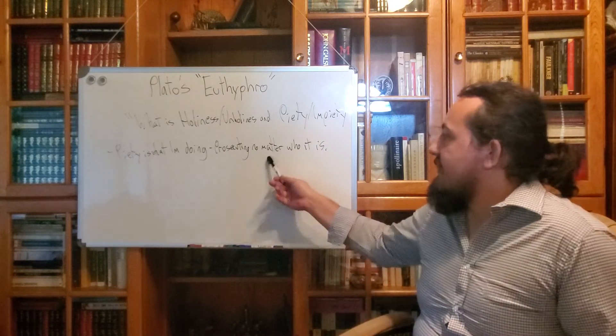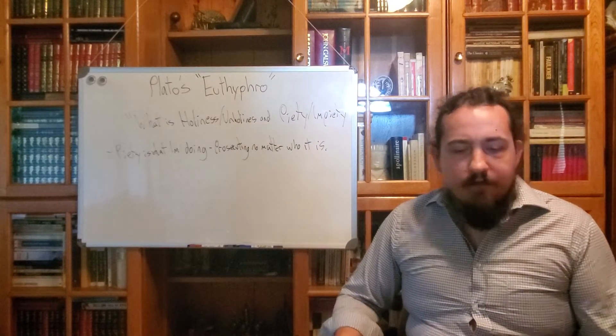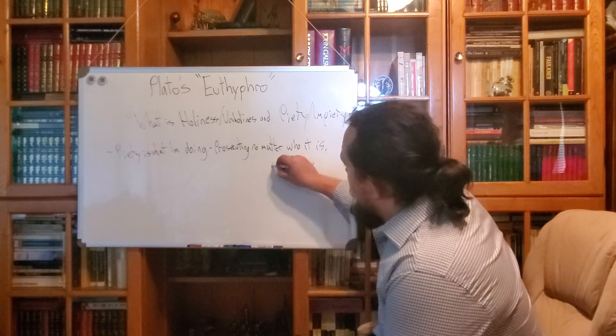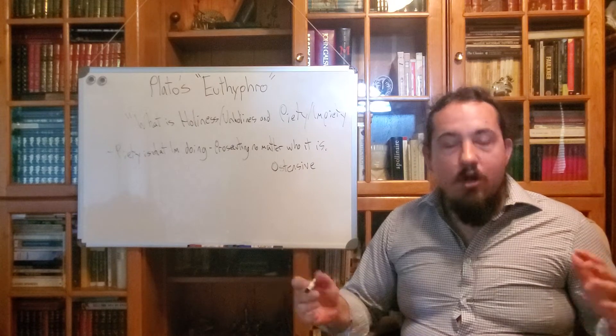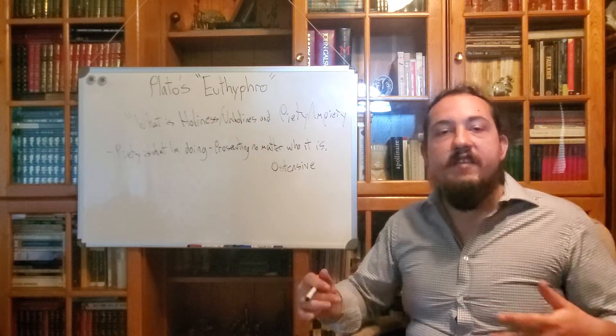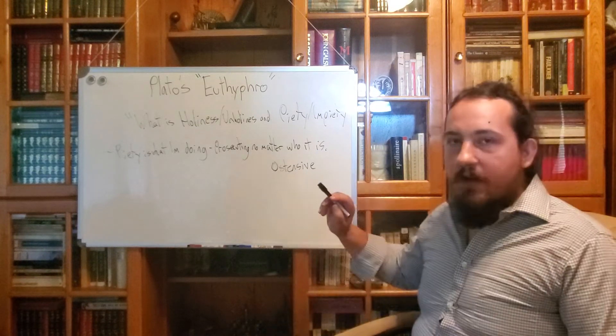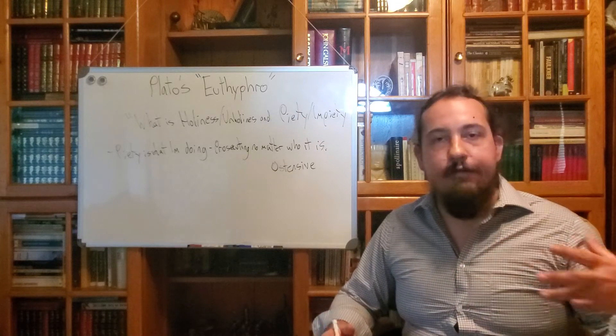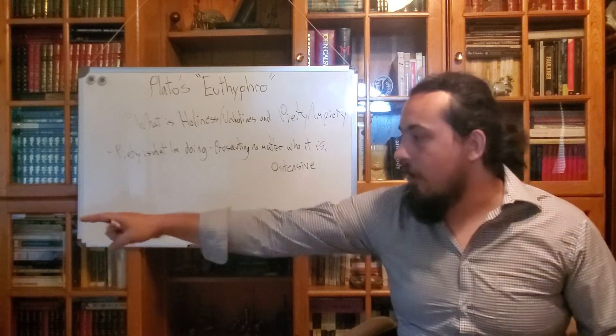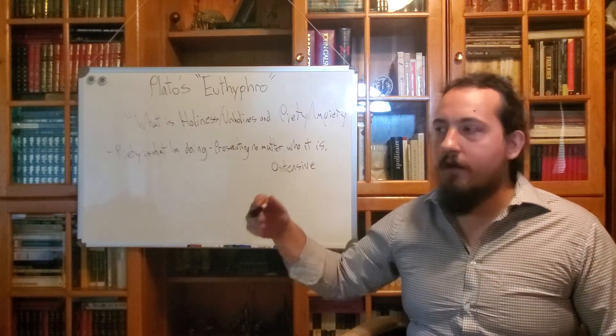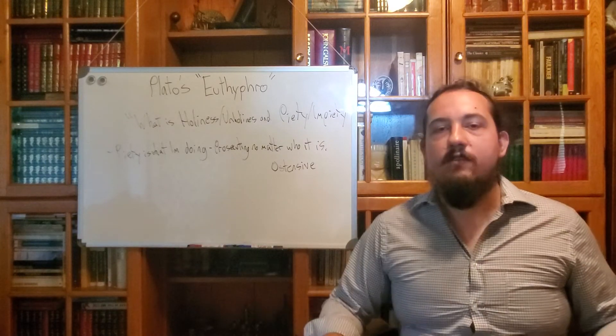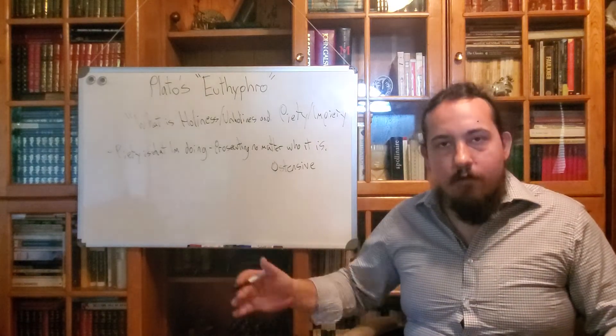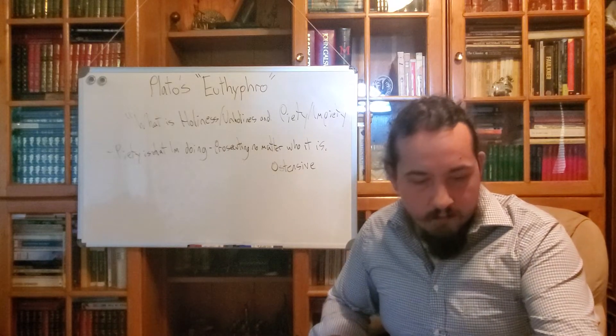So, Socrates announces his dissatisfaction with Euthyphro's answer, and he explains why. Euthyphro, you have given me an ostensive, that's a key word, ostensive definition, and not a definition of holiness in itself. I'm asking you what is the ideal form of holiness? Now, what does ostensive mean? Ostensive means defining something by giving examples. So, if I was to ostensibly define dog to you, I would point to a bunch of dogs being like, dog, dog, dog, dog. And your brain would do the rest of the work and you'd be like, ah, yes, dog, it's that kind of thing. But that's not what Socrates is looking for. He doesn't want Euthyphro to just point at stuff that is holy and have Socrates do the rest of the work. No, Socrates wants Euthyphro to clearly define what holiness is.